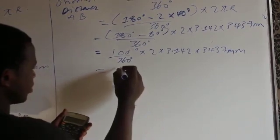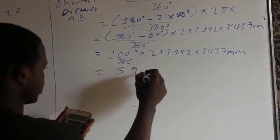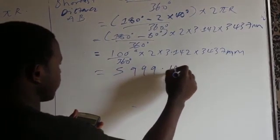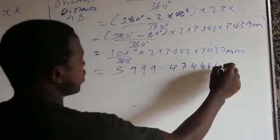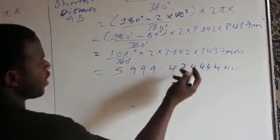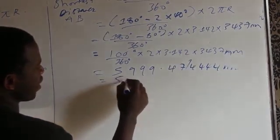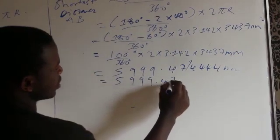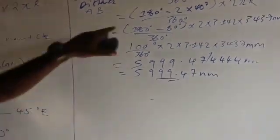So my answer here is 5999.474 Nm. And if I round off to 2 decimal places, this is 5999.47 Nm. Then let me show you why this formula is equal to this formula when calculating shortest distance in nautical miles.